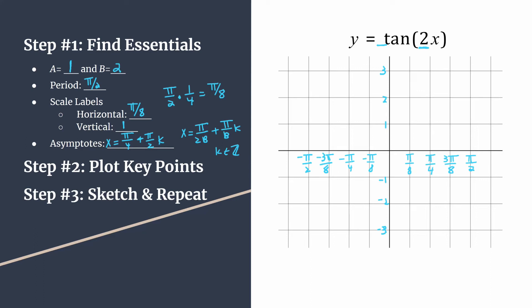We start with our first point at (0, 0). At the next horizontal tick mark, the x coordinate is pi over 8 and the y coordinate is simply a, so our point is at (pi over 8, 1). Now we're on to the asymptote — just move to the next horizontal tick mark and place a dotted vertical line. Our asymptote is at x equals pi over 4. Our final key point in the pattern is at the next tick mark: x is 3 pi over 8 and y is the opposite of a, so negative 1. We place our final point at (3 pi over 8, negative 1).